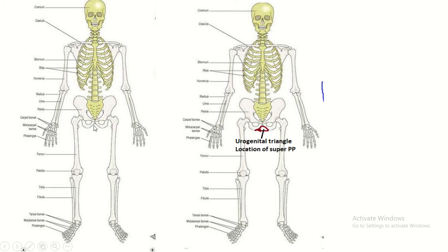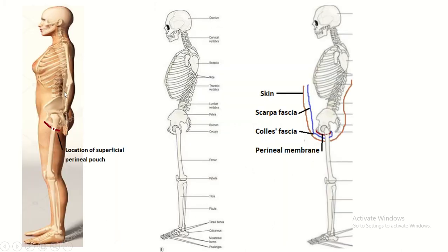Here a portion of the pelvic outlet is seen, showing the location of the urogenital triangle and the superficial perineal pouch. In the lateral view of the whole human body, you can see the location of the superficial perineal pouch and the urogenital triangle. The space between the two thighs is known as the perineum, which has two parts: the urogenital triangle and the anal triangle. The urogenital triangle is covered by a tough membrane known as the perineal membrane.